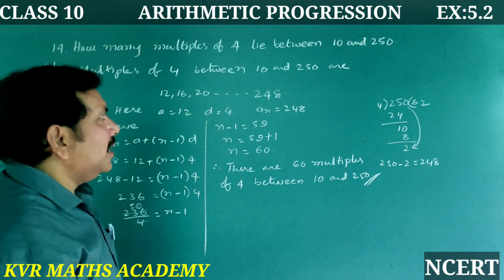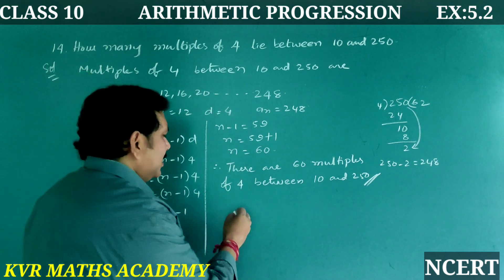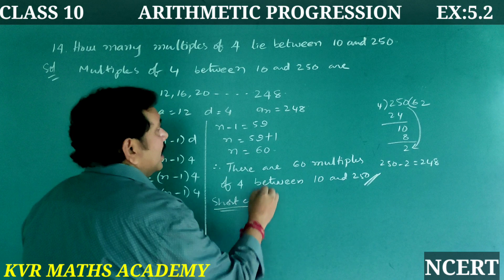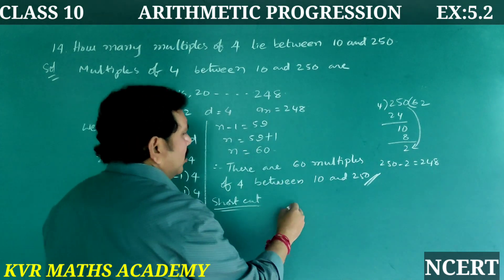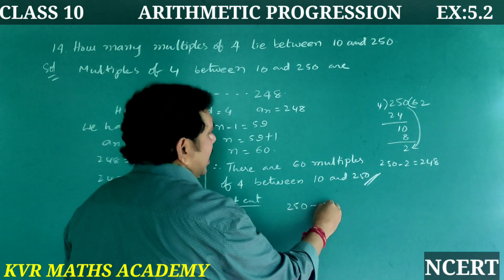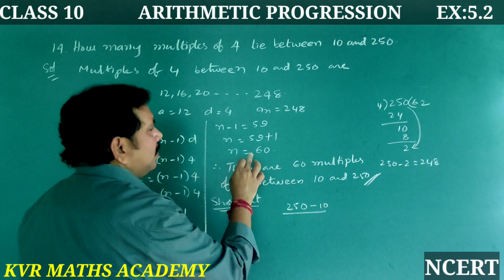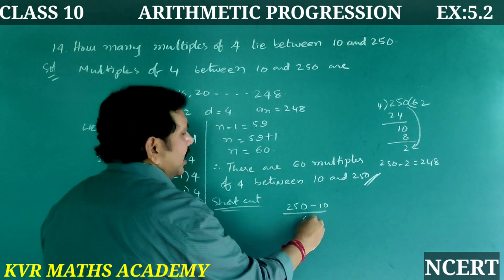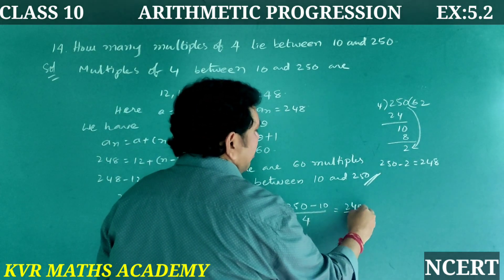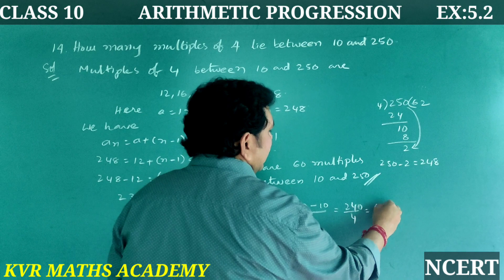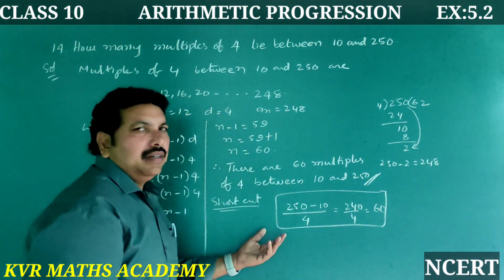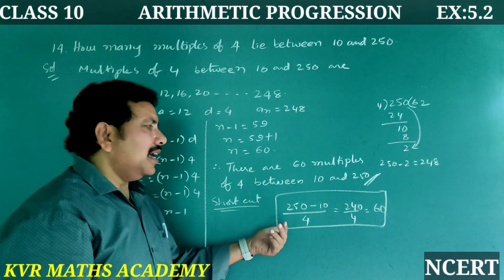As a shortcut: take the biggest number 250, minus the smallest number 10, divided by the multiple 4. That is 240 ÷ 4 = 60. So there are 60 multiples of 4 between 10 and 250. Note this shortcut.